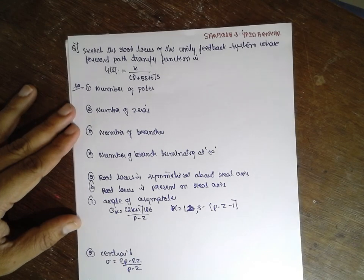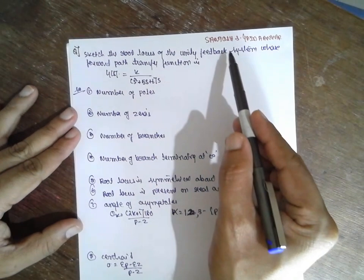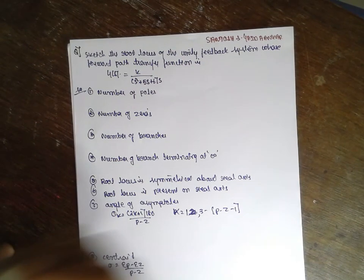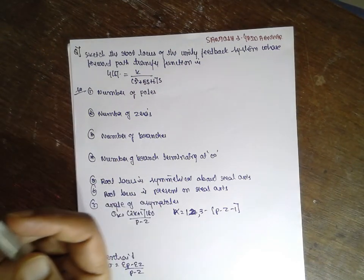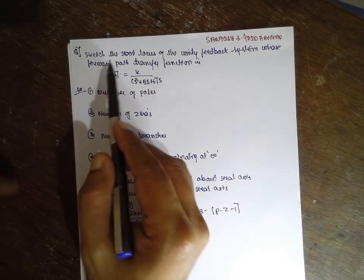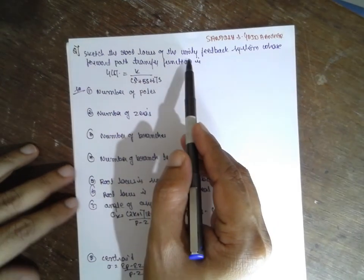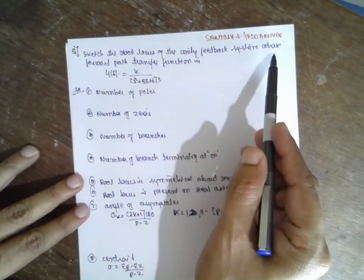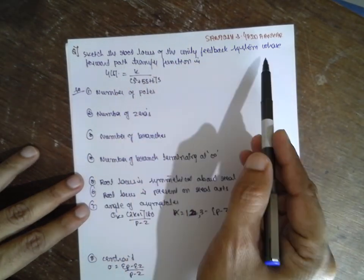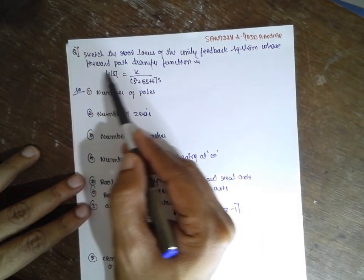I am Santosh Kaidankar. Today I am solving a control engineering problem on root locus. Sketch the root locus of a unity feedback system where H(s) equals 1, whose forward path transfer function is given.